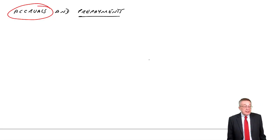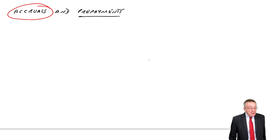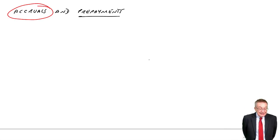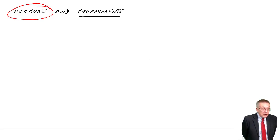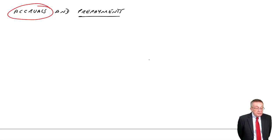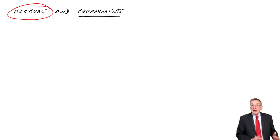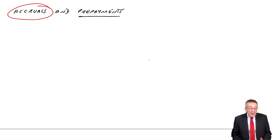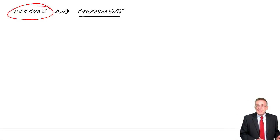Look first at example two in the lecture notes. Amit started business on the 1st of April 2000, and during the year to 31st of March 2001, he made the following payments in respect of telephone. Do note that a business can have any year end it wants — when the year end isn't December, it doesn't make it harder, but it makes it much easier to make silly mistakes.